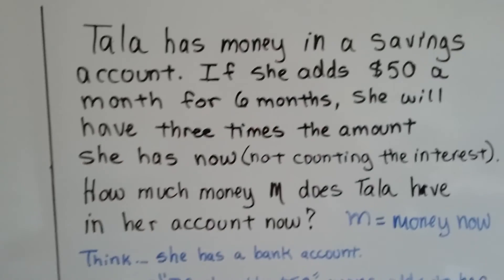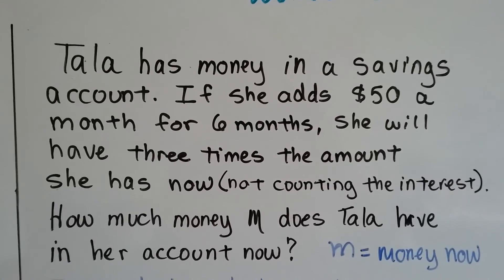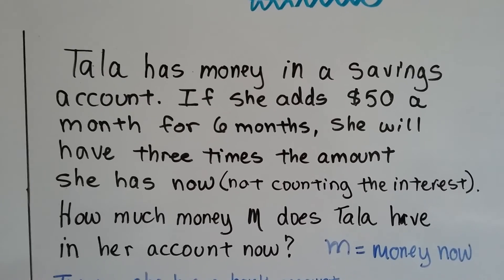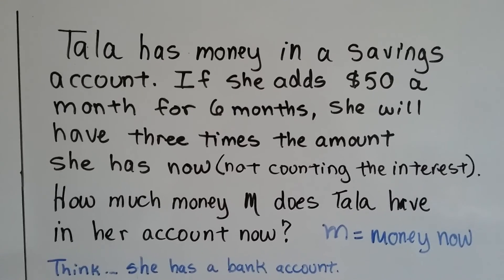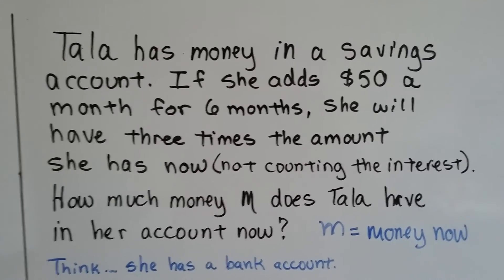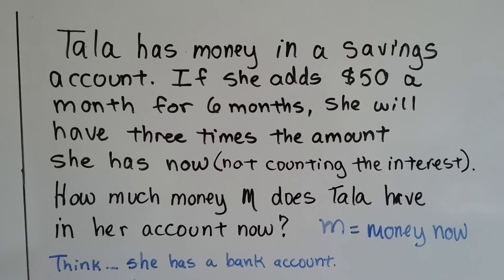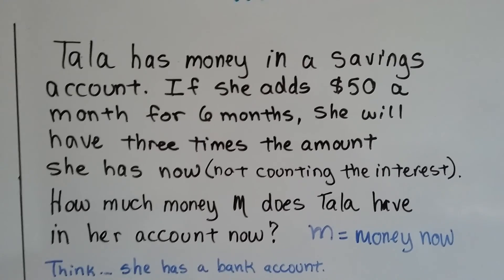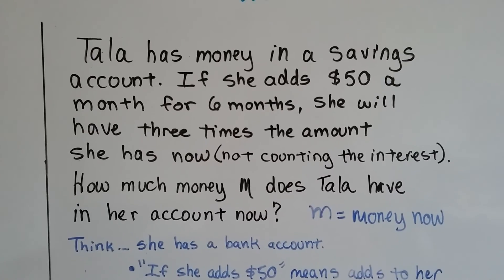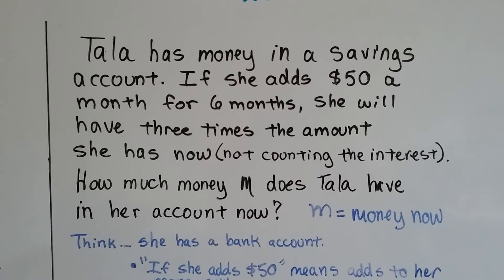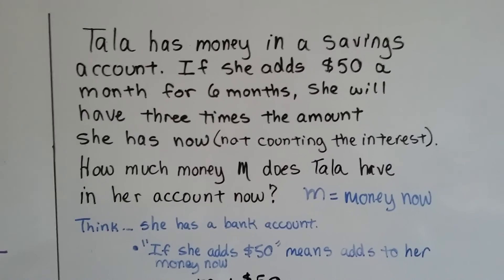So here's our word problem. Tala has money in a savings account. If she adds $50 a month for 6 months, she'll have 3 times the amount she has now, not counting the interest. How much money M does Tala have in her account now? Alright, so M is going to be the money now. I'm going to break this apart in a few words at a time. So we think, she has a bank account. Okay, we understand that.